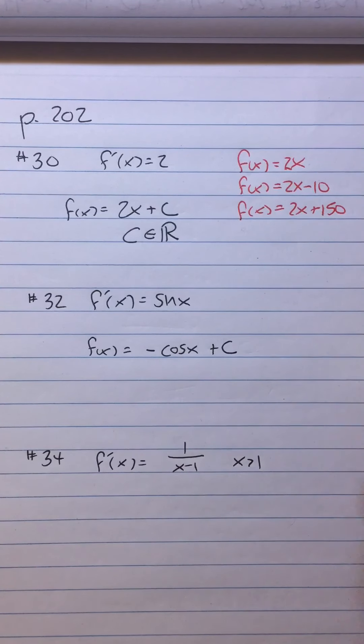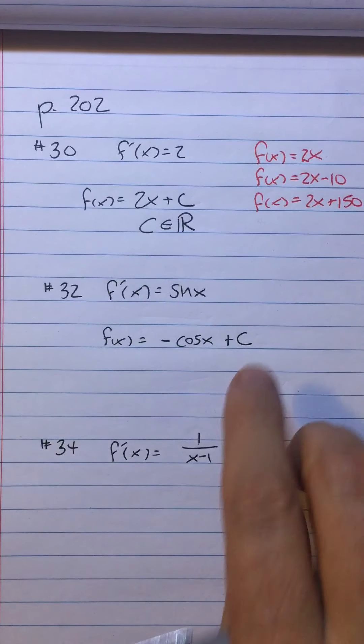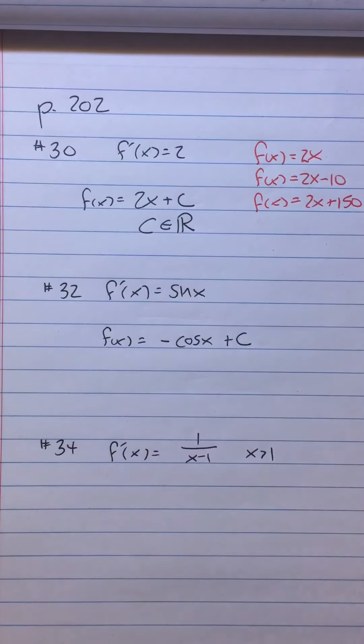Now we put on the plus c. Everybody's going to know that means c is a real number. That takes care of all the infinitely many possibilities, all the vertical translations which do not affect the derivative.